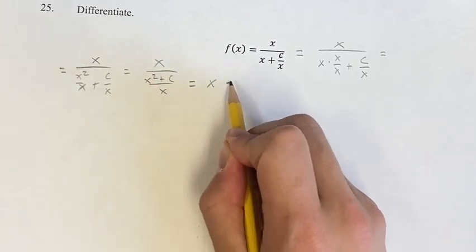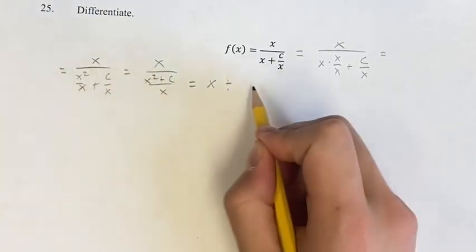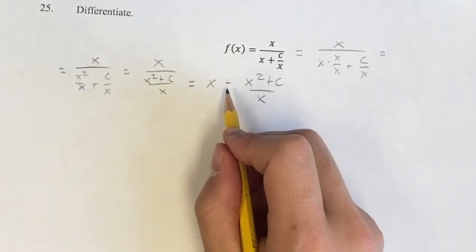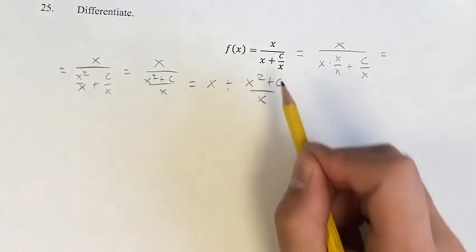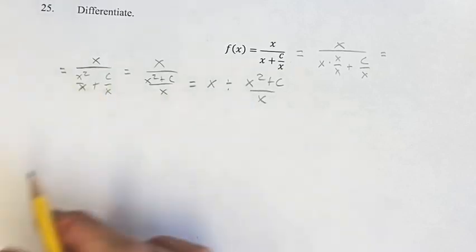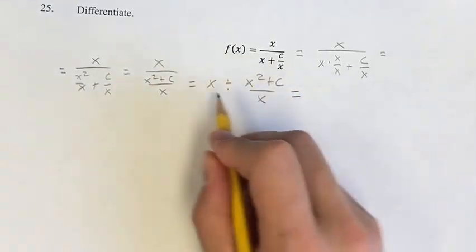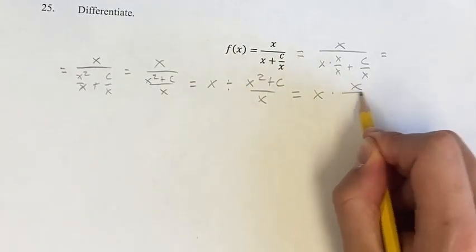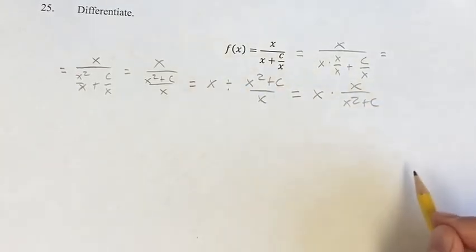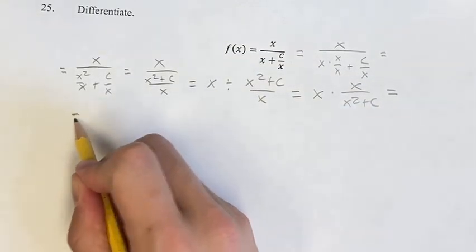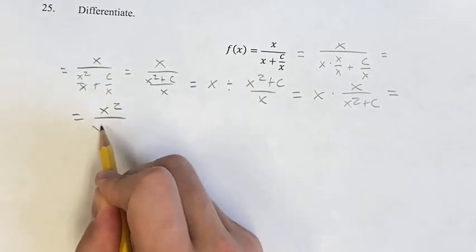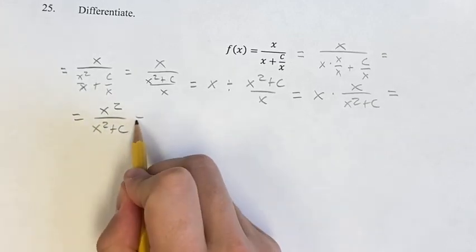Think of this as x divided by x squared plus c over x. And if you want to have it multiplying, you have to flip the thing that is dividing it. So this is equal to x times the flipped version of this, which is x over x squared plus c. Simplifying this, x times x in the numerator is x squared over x squared plus c. And this is f of x.